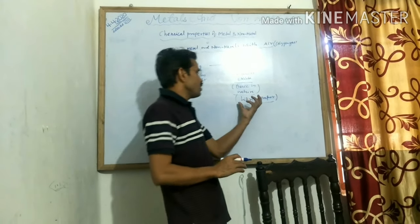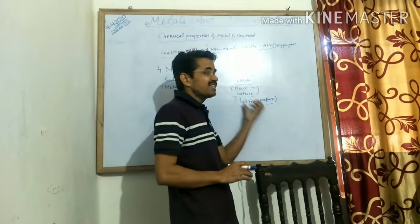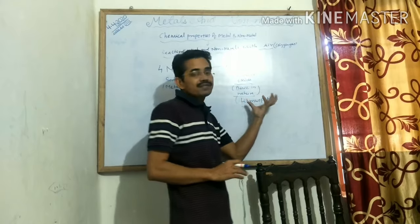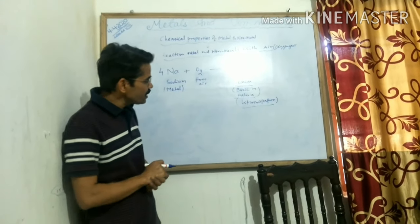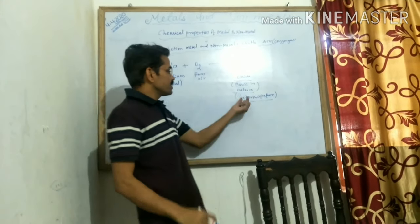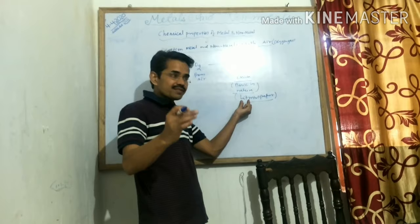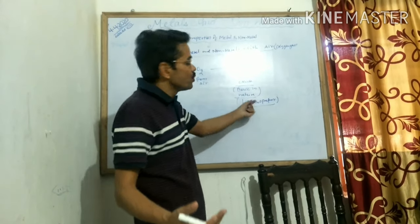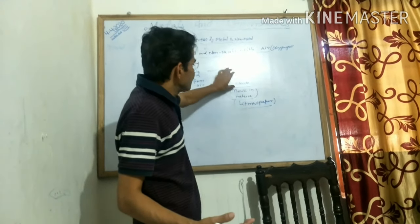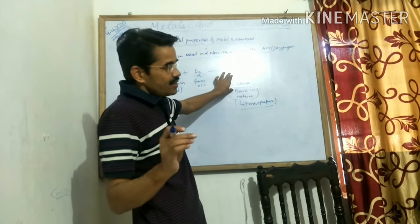We can recognize it by the change in color of the litmus paper. Here, the red litmus is converted into blue, which indicates that the substance is basic in nature.